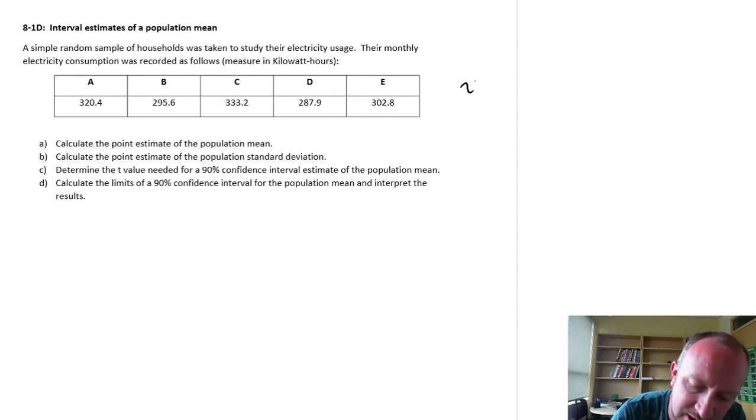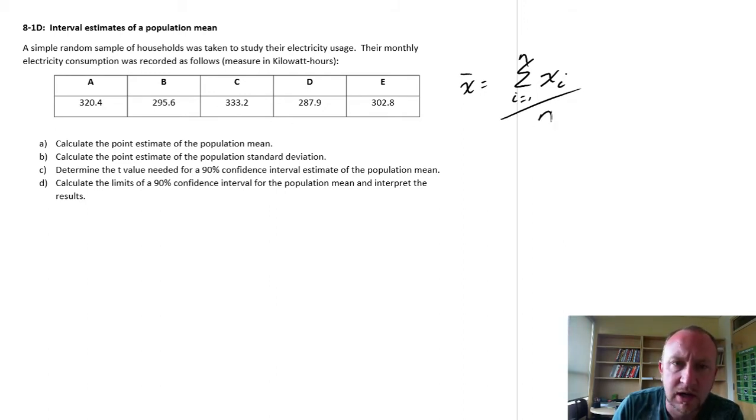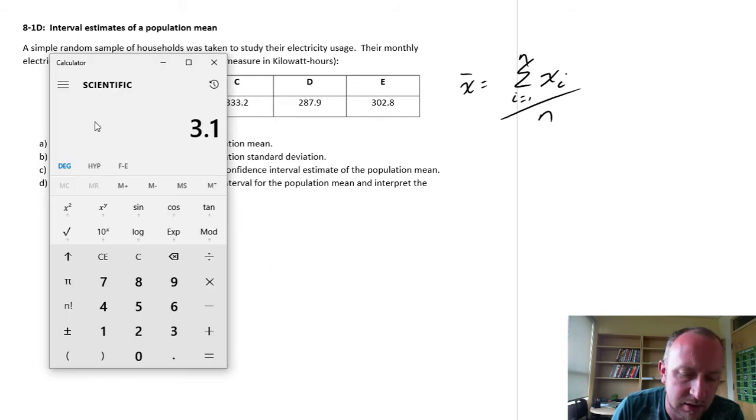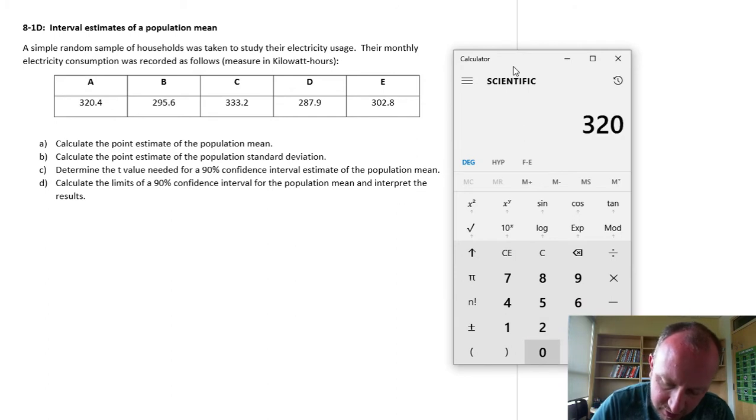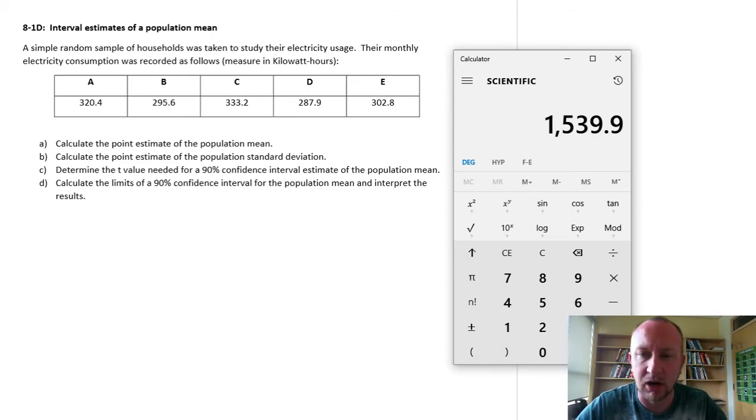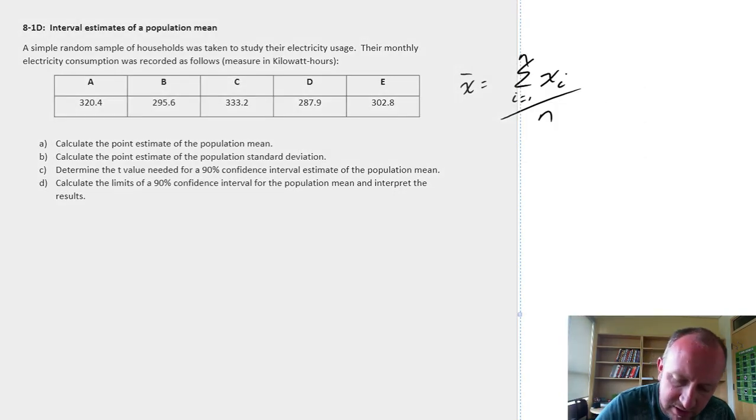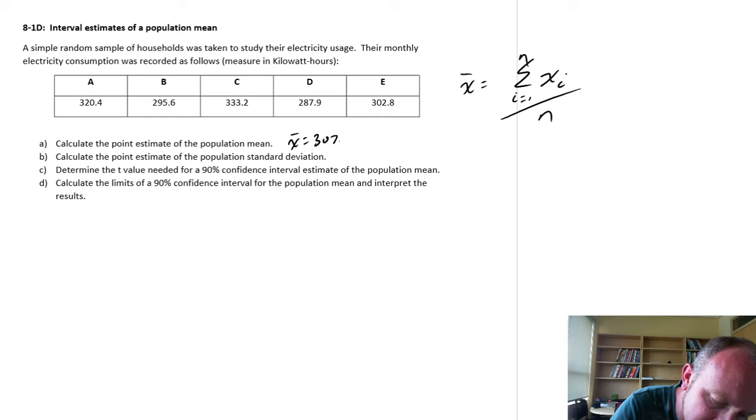For this we simply add up all of those individual observations and we divide by the total number of observations. So let's just get this out of the way. Here we are. So 320.4 plus 295.6, 333.2, 287.9, and 302.8. And so there's the numerator, there's the sum, all of the electricity used. And we divide it by the number of observations. Here I have five observations. So our average is 307.8. So x̄ is 307.8.